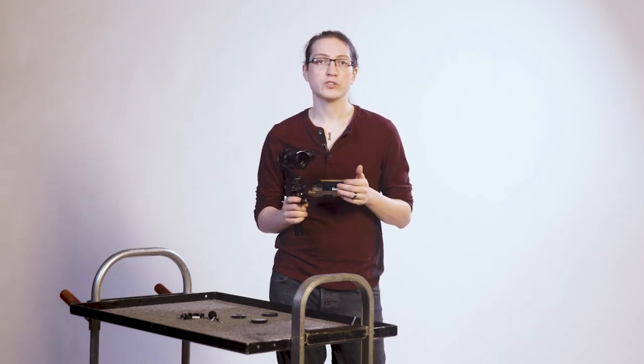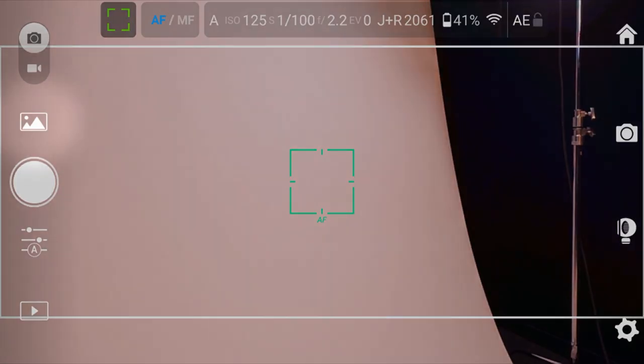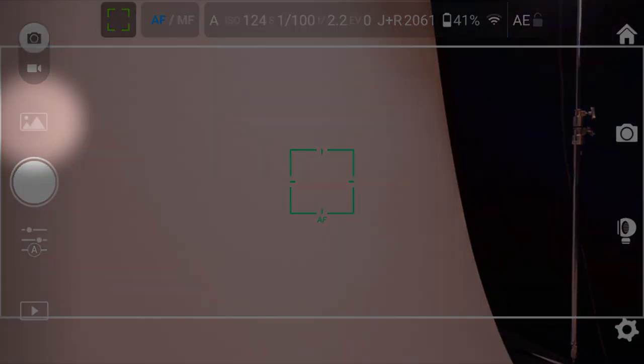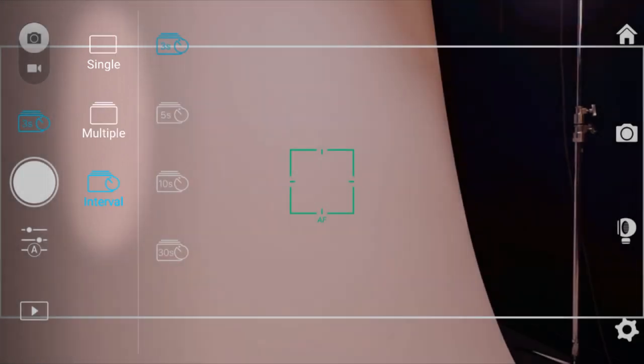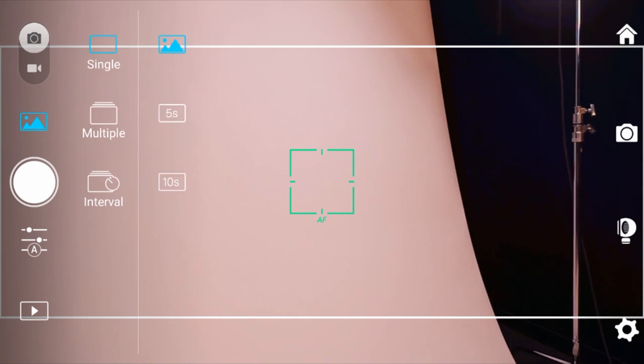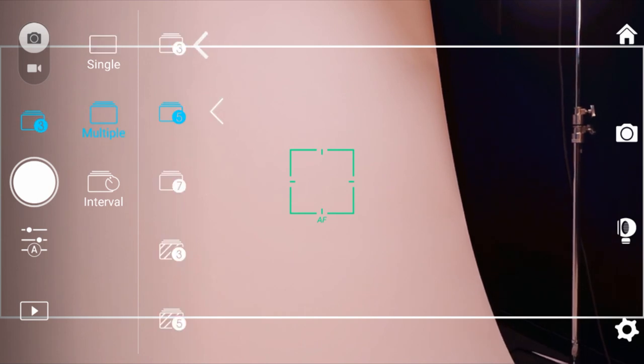In photo mode, you will also see an icon that resembles mountains. By tapping this icon, you can adjust how we are taking a photo, either as a single shot, multi-shot, or interval. Clicking each will bring up a submenu that will give you additional options. In single shot, you can choose to immediately take a picture when the shutter button is pressed, or to have a 5 or 10 second countdown. In multi-shot, you will have options for a 3 shot, 5 shot, and 7 shot burst.